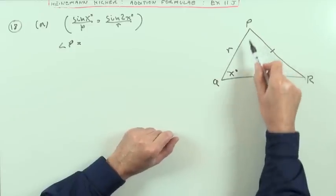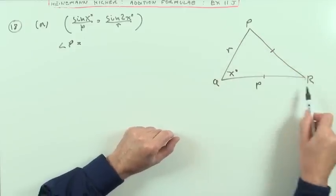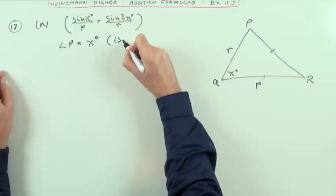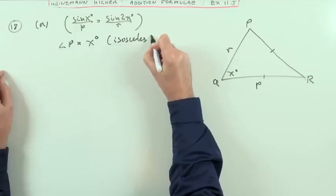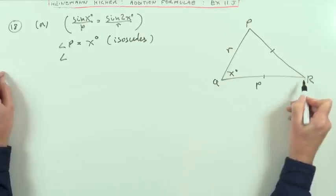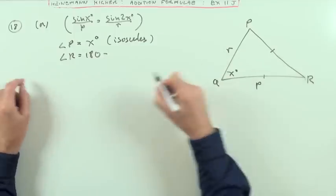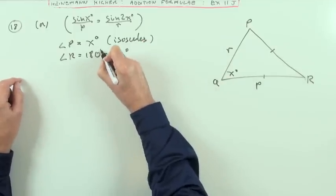Angle P, in one of the base angles of the isosceles triangle, must equal X, and I was given the reason for that, it's isosceles. And then angle R will be 180 minus both of them, so it'll be minus 2X.